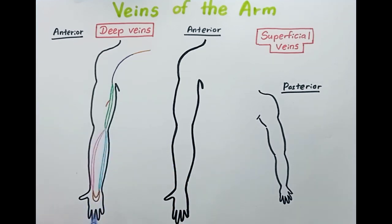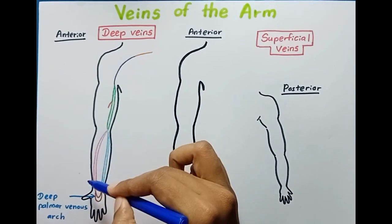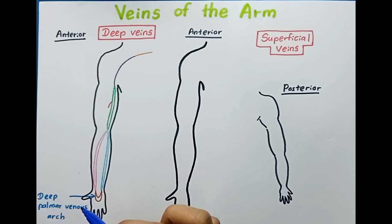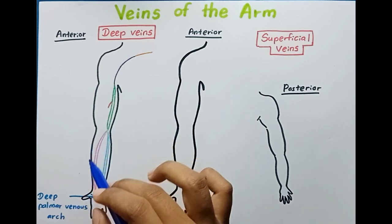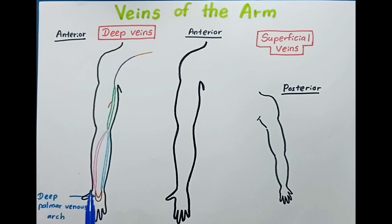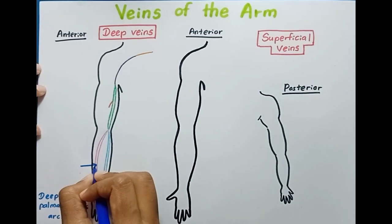Here you can see the deep palmar venous arch. In pink color you can see the radial vein. This radial vein runs along the radial artery and drains the lateral aspect of the forearm, with its origin from the lateral part of the deep palmar venous arch.